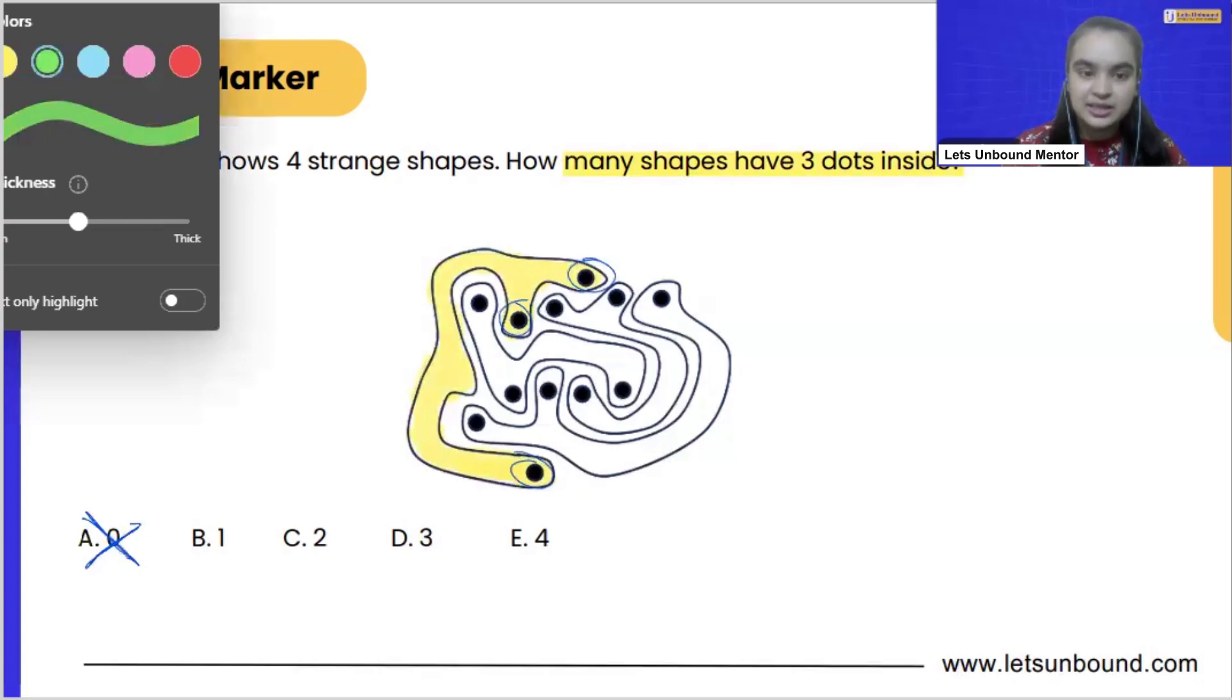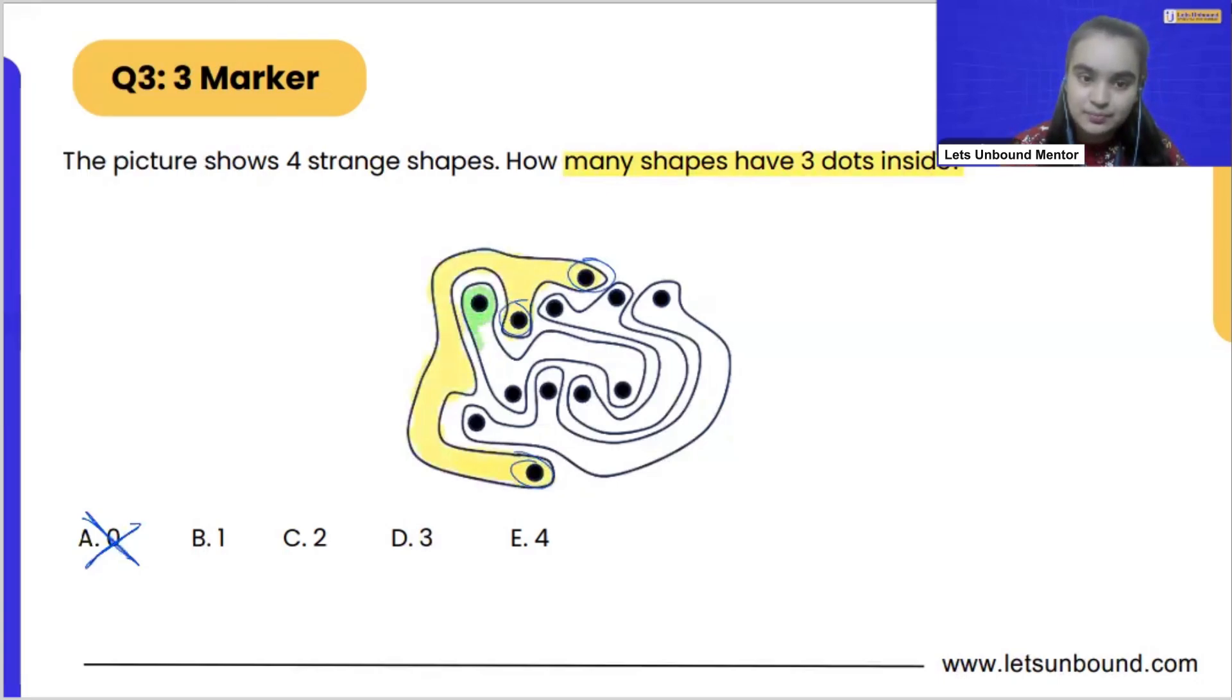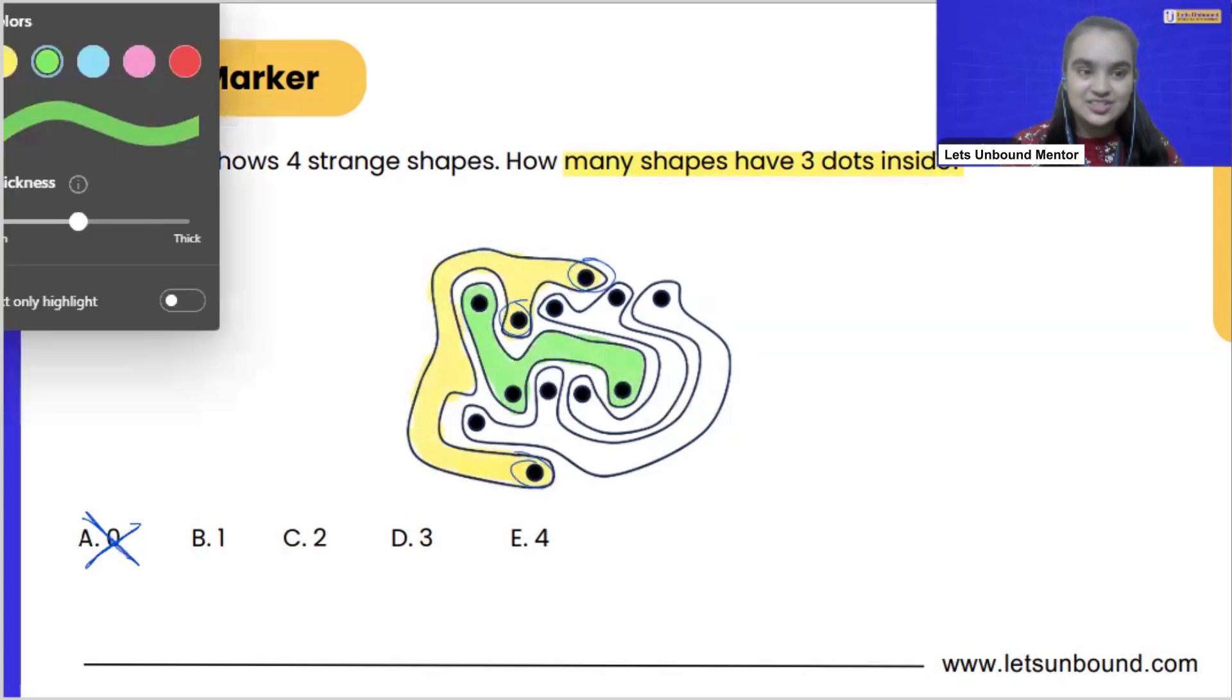Now, let's see the next shape. Maybe this one. So we just have to follow the pattern. And what we are able to see that this shape is also having three dots. Let's check now.